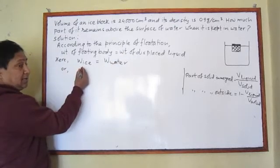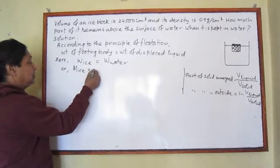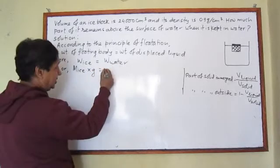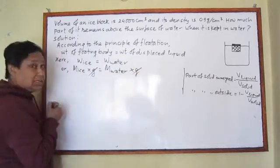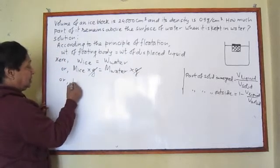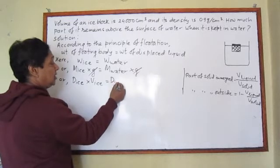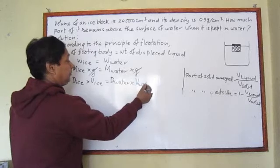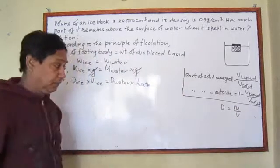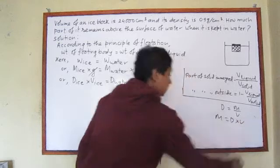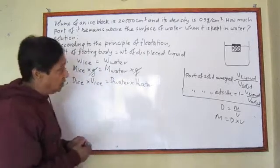We know that weight equals mass times g. So weight of ice equals mass of ice times g, and weight of displaced water equals mass of displaced water times g. The g cancels from both sides, giving mass of ice equals mass of displaced water. Mass of ice can be written as density of ice times volume of ice, and mass of water as density of water times volume of water, since density equals mass divided by volume.